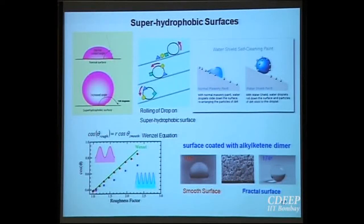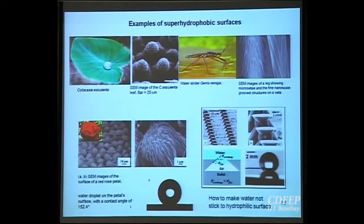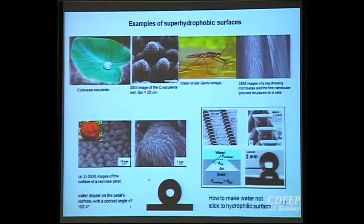Examples of super-hydrophobic surfaces include the lotus leaf, which has a fractal surface giving a very high contact angle. The water strider, as I mentioned, not only has hydrophobic skin but also has very fine fractal roughness on its surface. Another example is an artificially created roughness of a specific geometry that makes drops very hydrophobic.